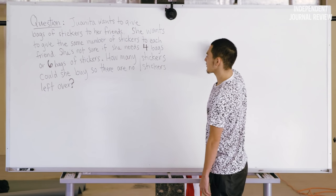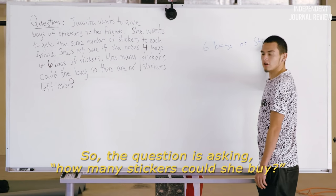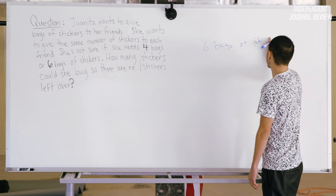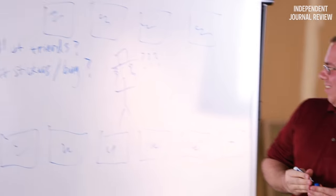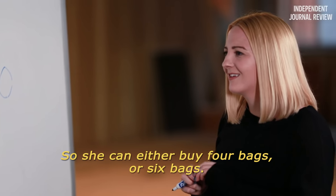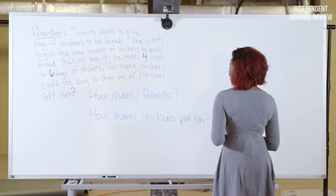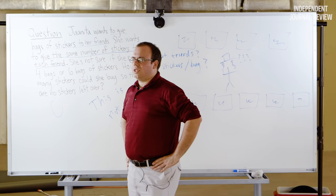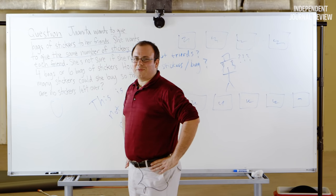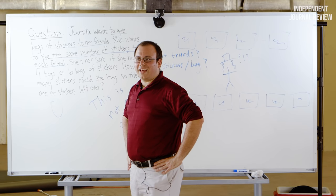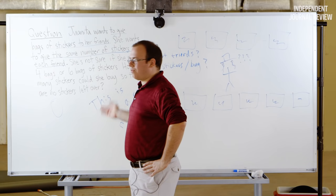I'm going to assume she has six friends, so we're going to have six bags of stickers. The question is asking how many stickers could she buy? She can either buy four bags or six bags. You could infer from that that she's got some multiple of friends that's related to four or six — like she's got twelve friends or something like that.